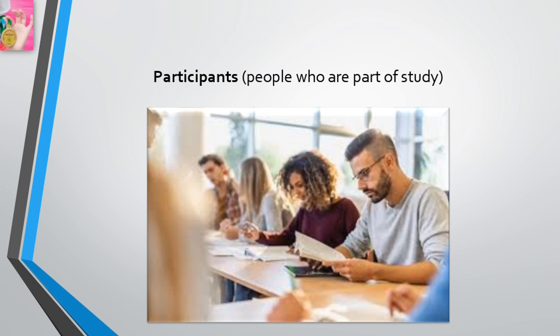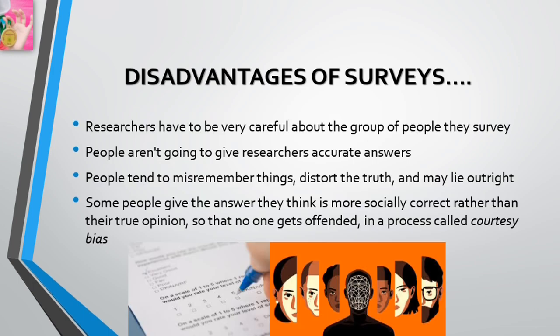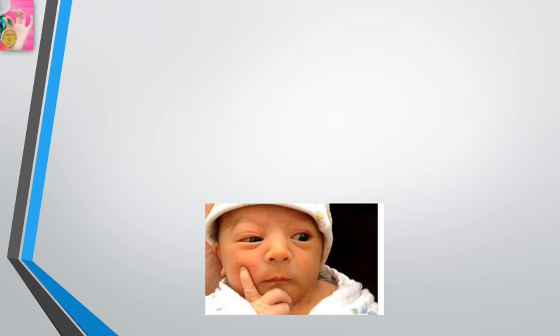That brings up the other major disadvantage of the survey technique: people aren't always going to give researchers accurate answers. The fact is, people tend to misremember things, distort the truth, and may lie outright — even if the survey is anonymous. Sometimes people think they might not come off sounding very socially desirable, so some people deliberately give answers they think are more socially correct rather than their true opinion. This is a process called courtesy bias.